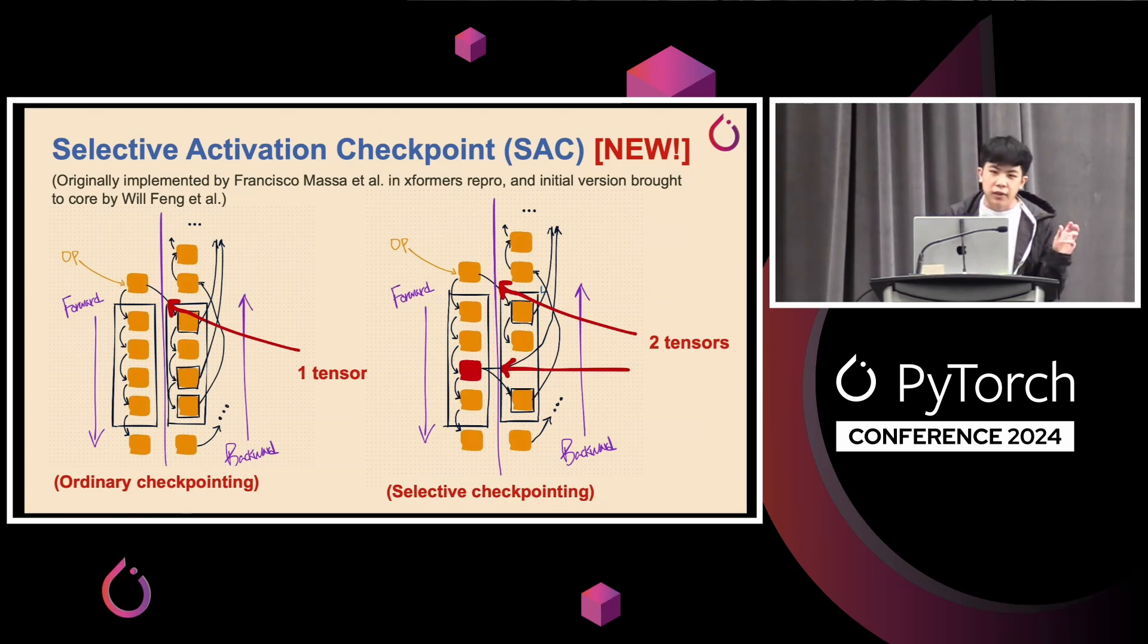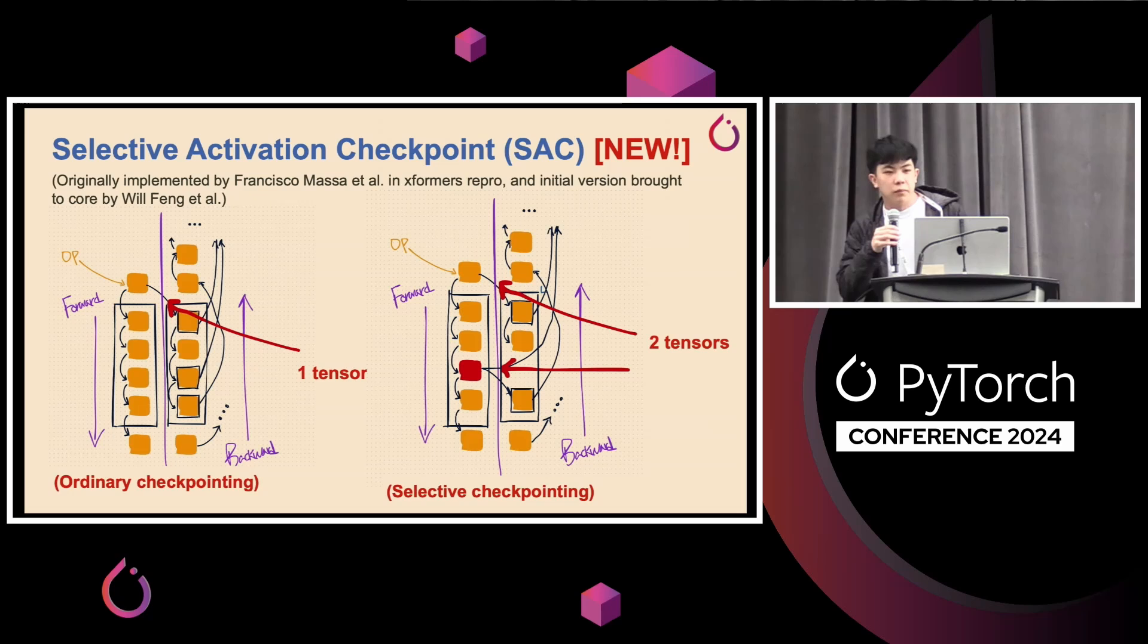So on the left here is sort of the same diagram from before where you apply AC, where you save a single tensor and have to recompute every single tensor in the recomputed region. On the right side, suppose you have, let's say, an operation that's kind of expensive. You do not want to recompute it. SAC gives you the flexibility to sort of selectively not recompute that operation. So in this case, instead of saving a single tensor, you get to save two tensors, but in exchange you get to avoid computing that expensive operation.